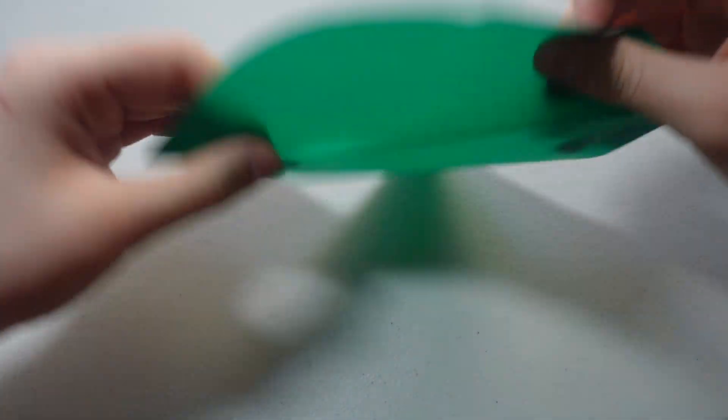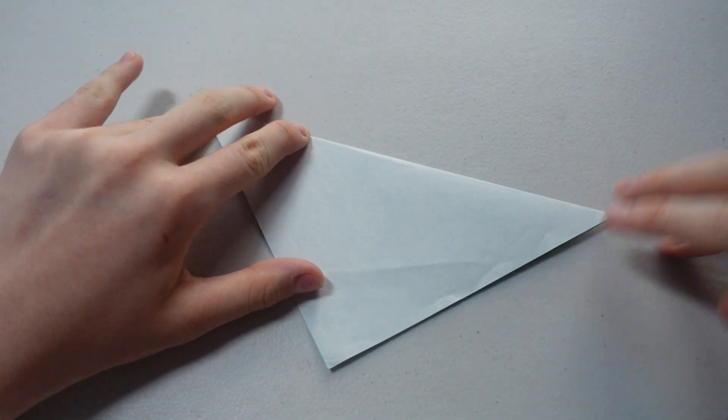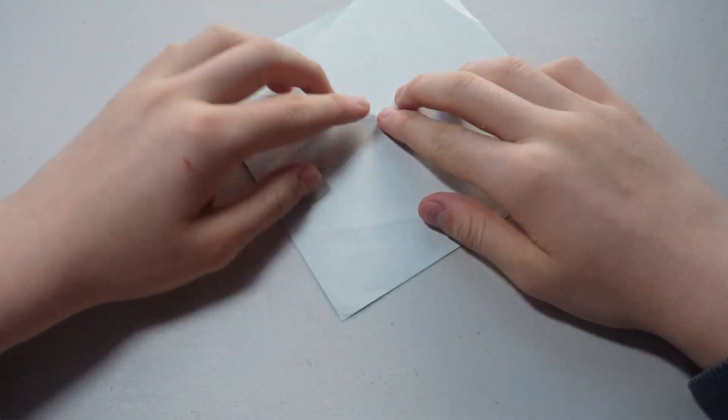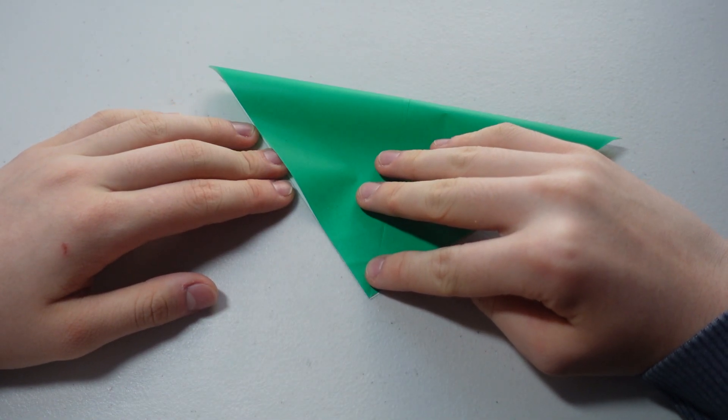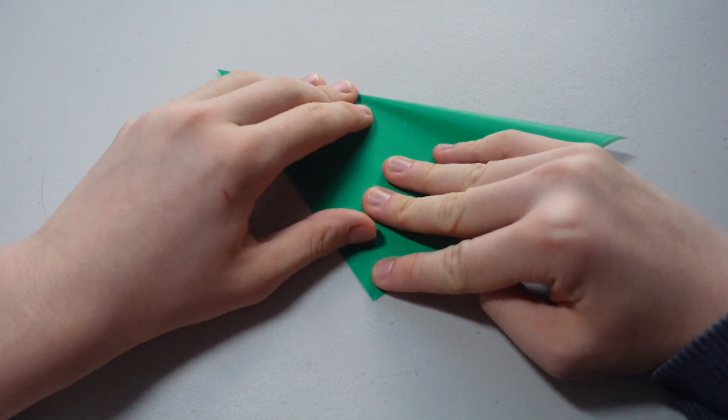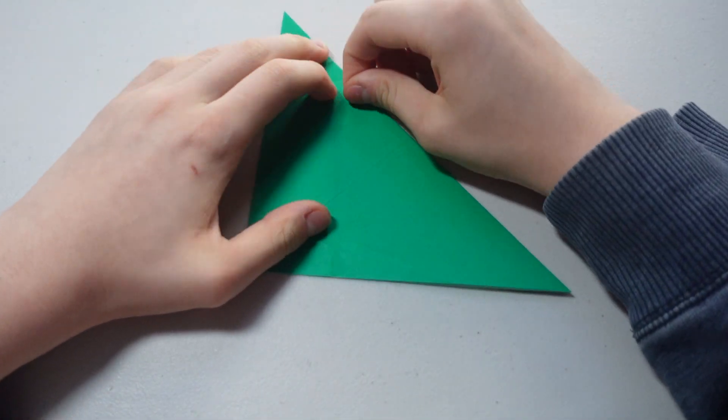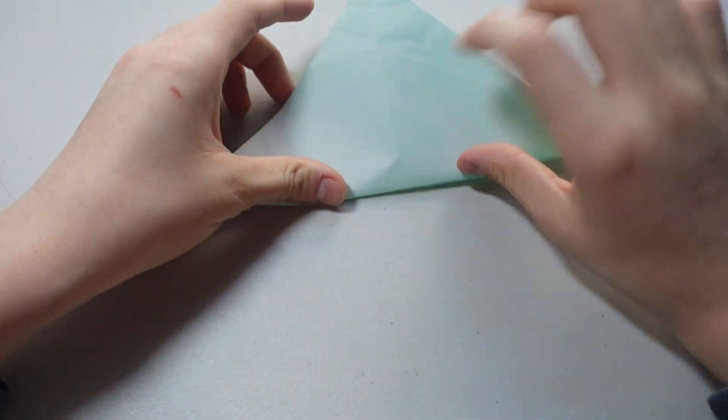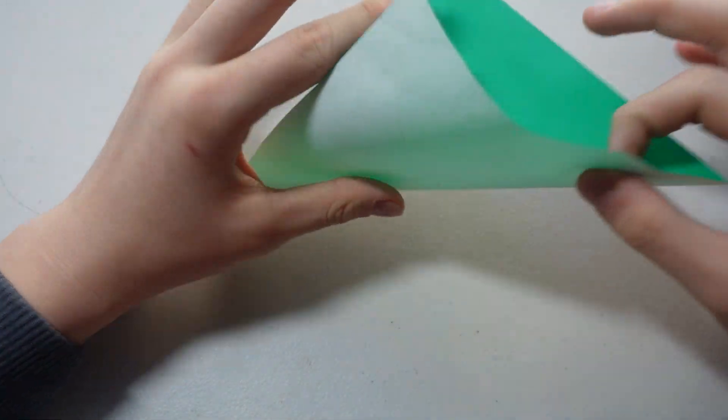Alright, so we have that. Open it back up and use the same lines to make the triangle. We just want these creases, that's all we want. Fold it in half again. We use the other side to make a triangle. Open it. Alright, so now we've got the creases.